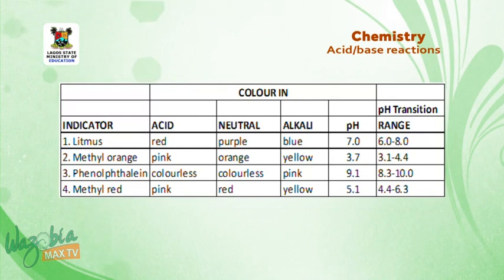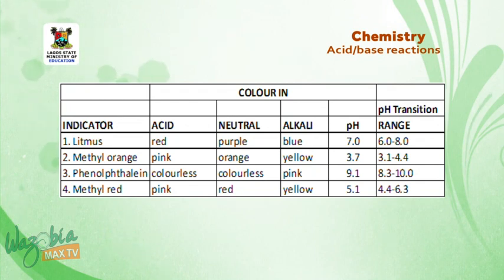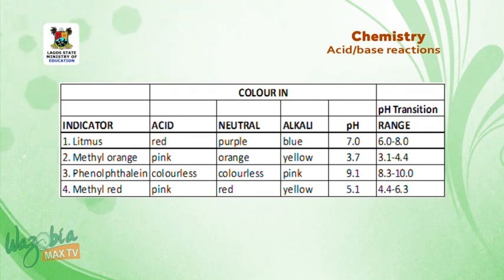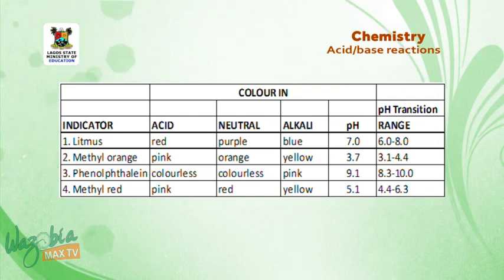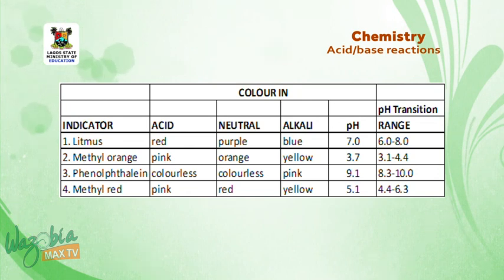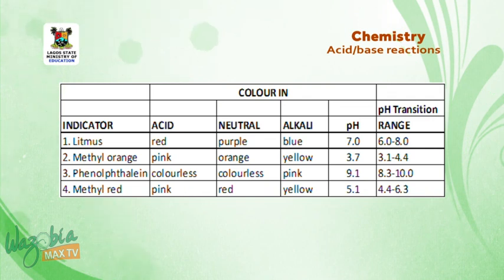We have four types of indicator. Number one is litmus: red in acidic medium, purple in neutral medium, blue in alkaline medium, pH 7, and pH transition range 6.0 to 8.0. Number two is methyl orange: pink in acidic medium, orange in neutral medium, yellow in alkaline medium, pH 3.7, and pH transition range 3.1 to 4.4.